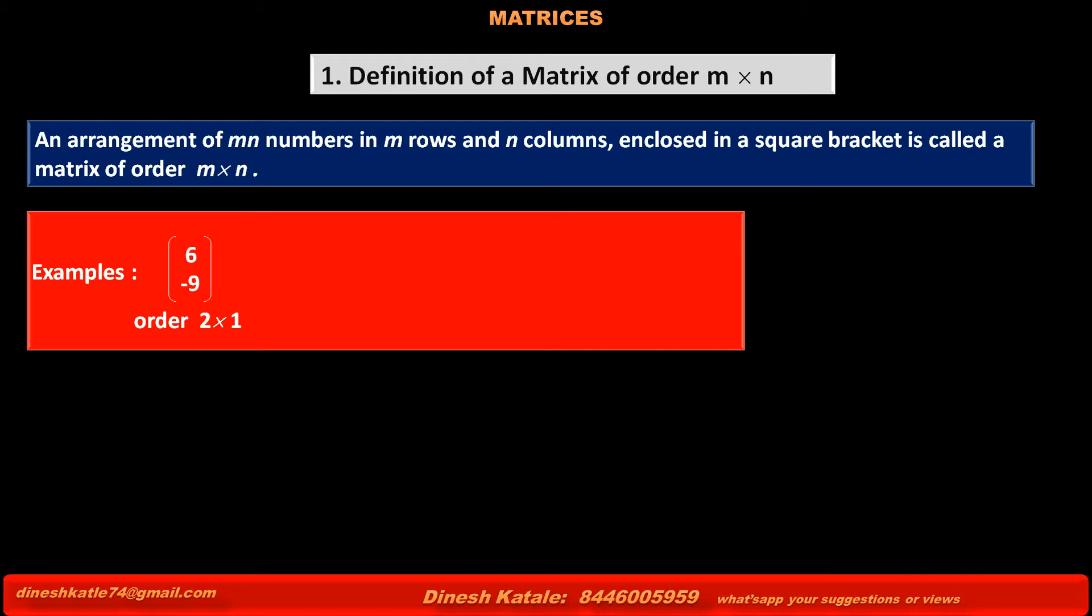So the order of this matrix is 2 into 1. The second matrix contains three elements: 1, 0, 3. This matrix has one row and three columns.